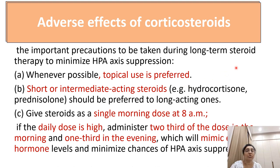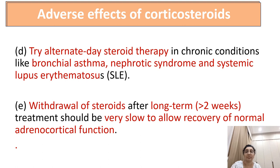Important precautions to minimize HPA axis suppression during long-term steroid therapy: whenever possible, topical use is preferred; short-term or intermediate-acting steroids should be preferred over longer-acting steroids. Give steroids as a single morning dose at 8 a.m., or if the daily dose is high, administer two-thirds of the dose in the morning and one-third in the evening, to mimic the natural hormone release pattern and minimize HPA axis suppression. Try alternate-day therapy in chronic conditions like bronchial asthma, nephrotic syndrome, and systemic lupus erythematosus — this is called pulse therapy.